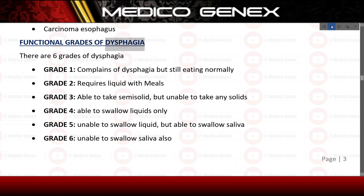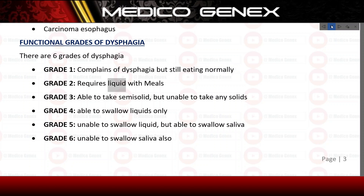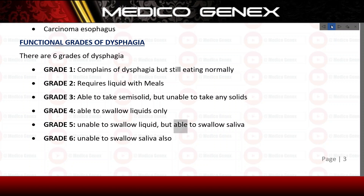Functional grades of dysphagia — there are 6 grades. Grade 1: complaints of dysphagia but still eating normally. Grade 2: requires liquid with meals. Grade 3: able to take semisolids but unable to take any solids. Grade 4: able to swallow liquids only. Grade 5: unable to swallow liquid but able to swallow saliva. Grade 6: unable to swallow saliva also.